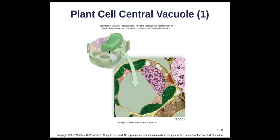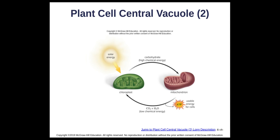The plant cell stores materials in the central vacuole as part of a larger energy process: sunlight hits chloroplasts, which capture that energy to make sugar. That sugar goes to the mitochondria to be broken down to make energy — ATP — to continue the whole process. Chloroplasts and mitochondria are the organelles we'll look at next.